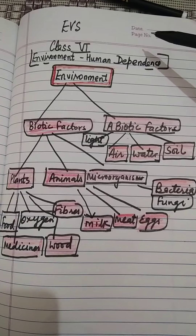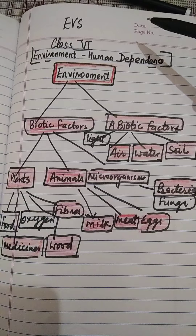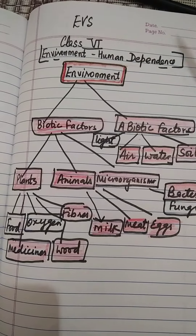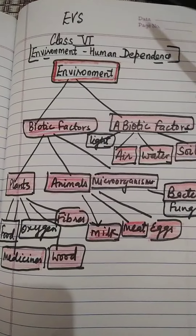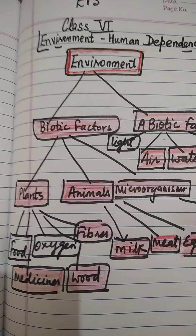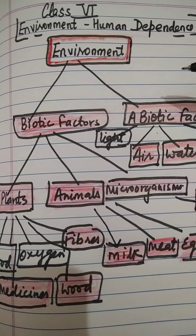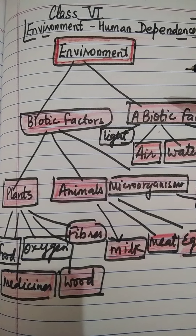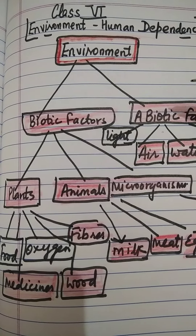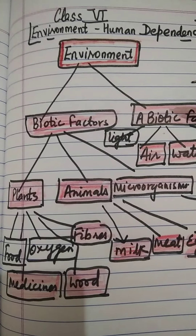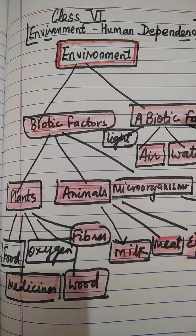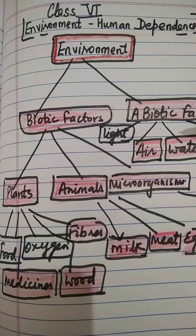Class, today in EBS, I am going to start a new topic that is Environment-Human Dependence. To start with, human life in its present form is a unique feature of the earth. Because the physical conditions of the earth are typically suited for life.